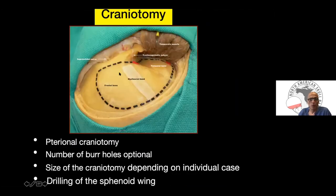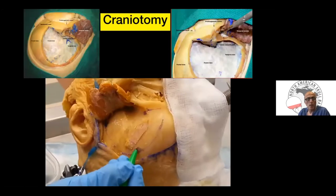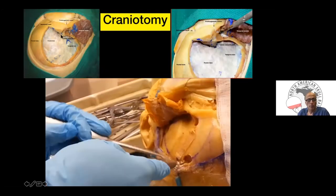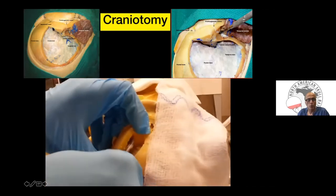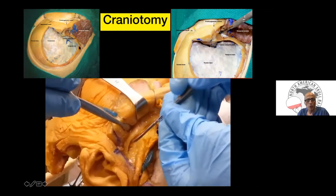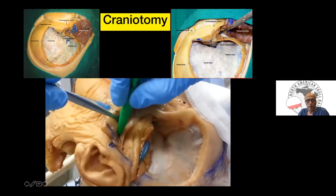The craniotomy and number of burr holes are optional and tailored to your needs. If you need more anterior cranial fossa exposure, come more anterior; if you need more temporal middle cranial fossa exposure, go more posterior. The number of burr holes depends on patient age, dural adherence, and other factors. This shows the final product — in this example we need more anterior exposure, but if not needed you can minimize the anterior craniotomy.